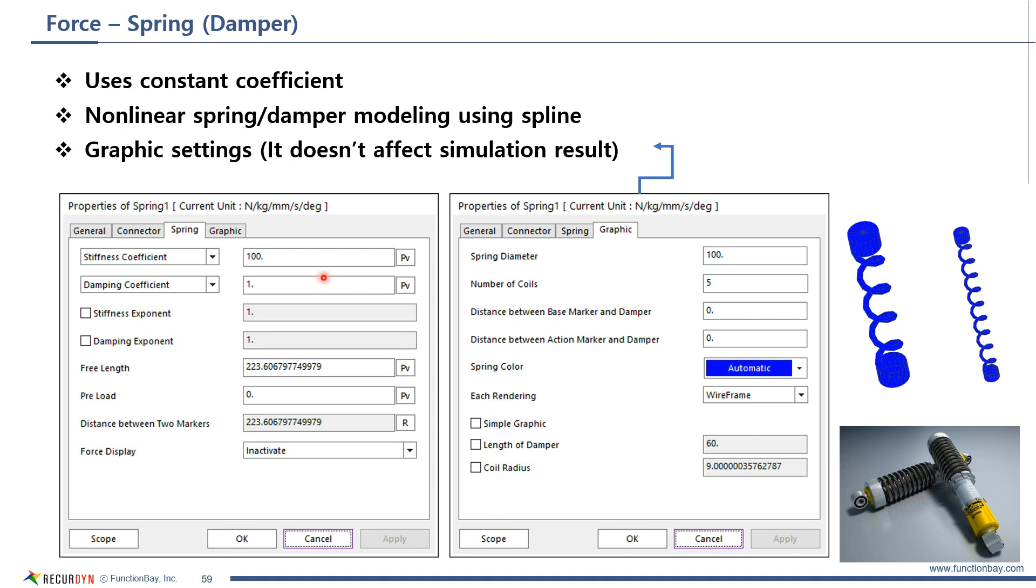Spring includes the parameters for spring and damper. By default, constant coefficients are used. It is possible to use nonlinear stiffness and damping coefficient using spline.